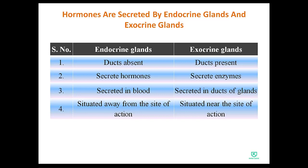Fourth difference: endocrine glands are situated away from the site of action — they are far from where they show their effect. Exocrine glands are situated near the site of action, close to where they have to show their effect on a tissue.